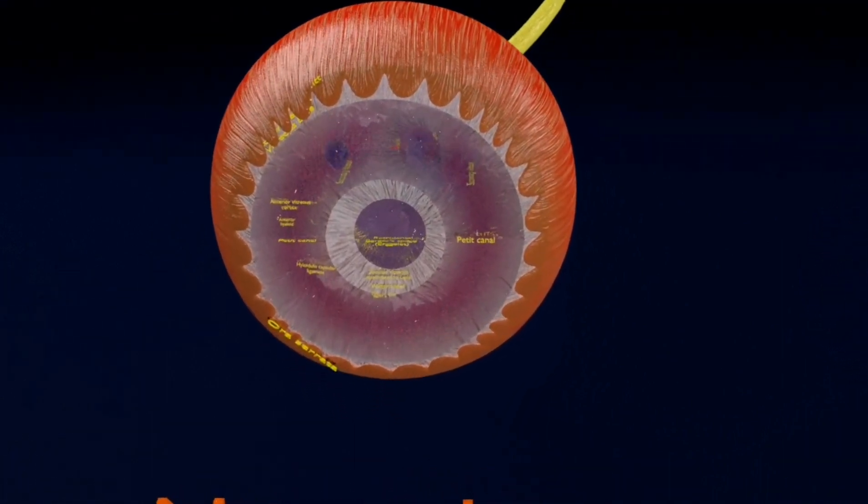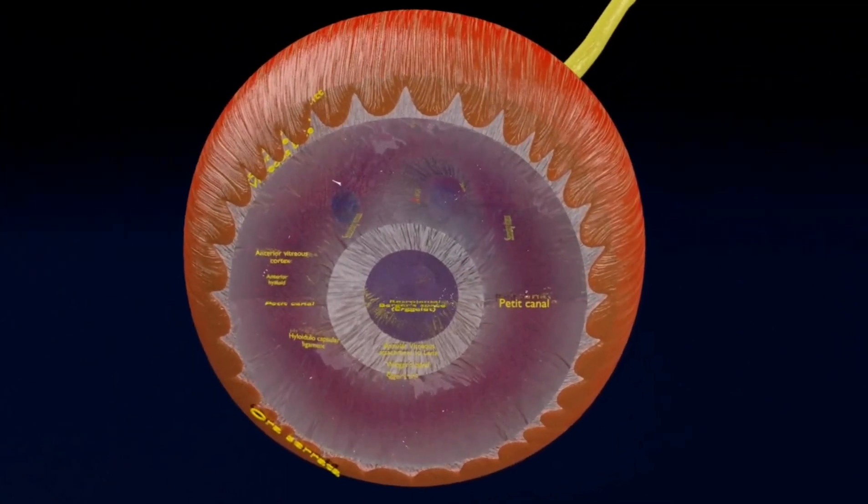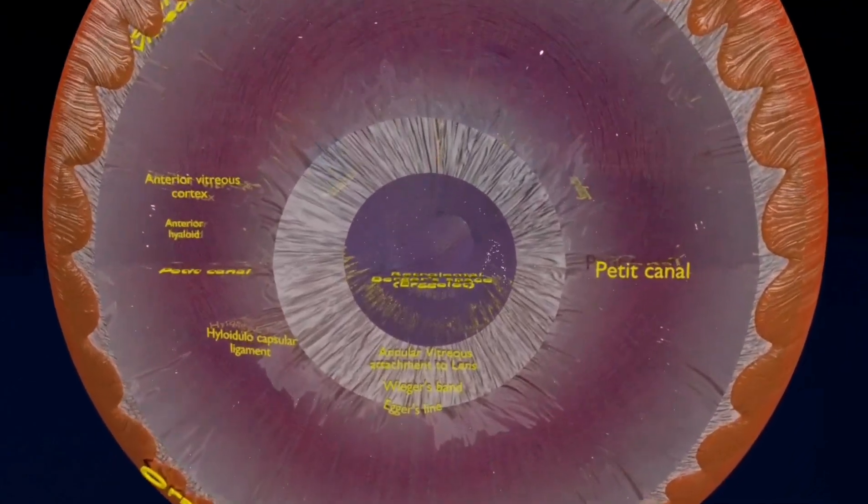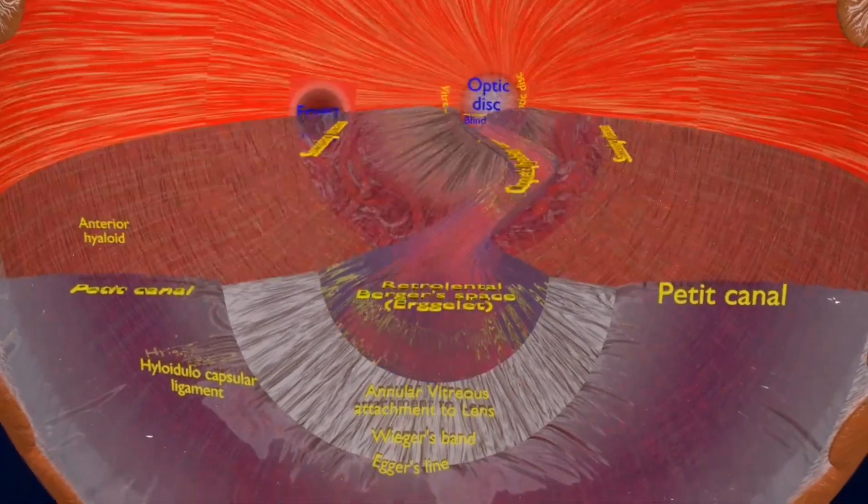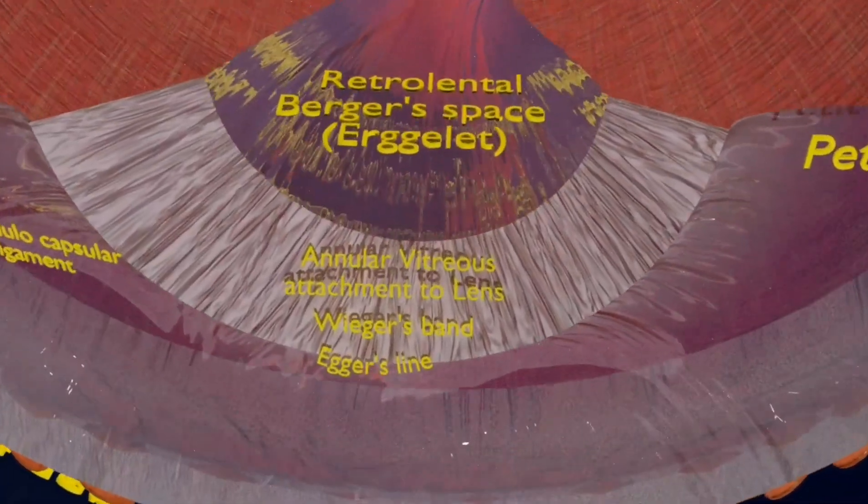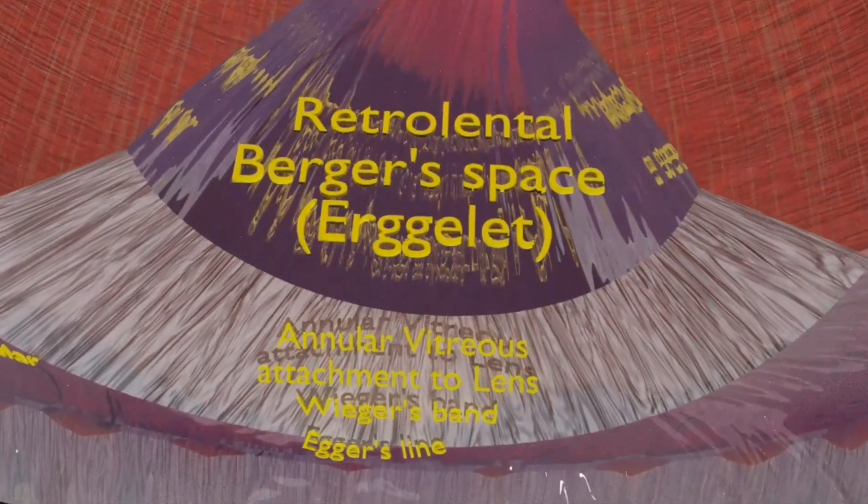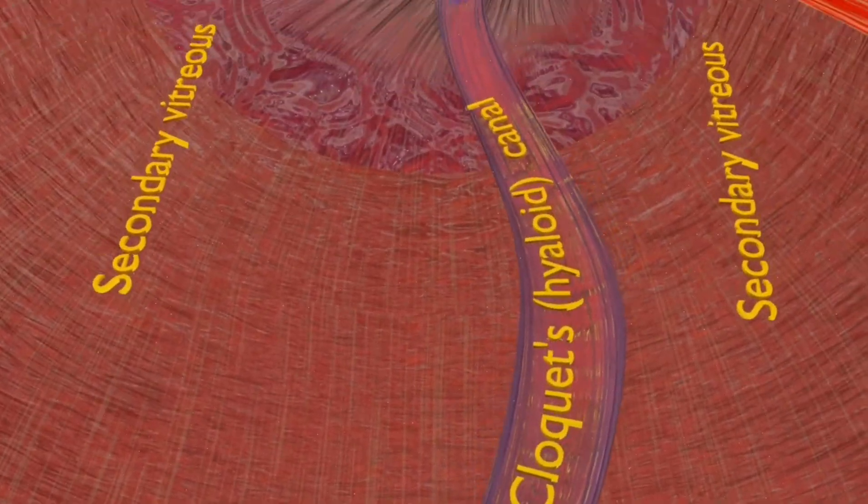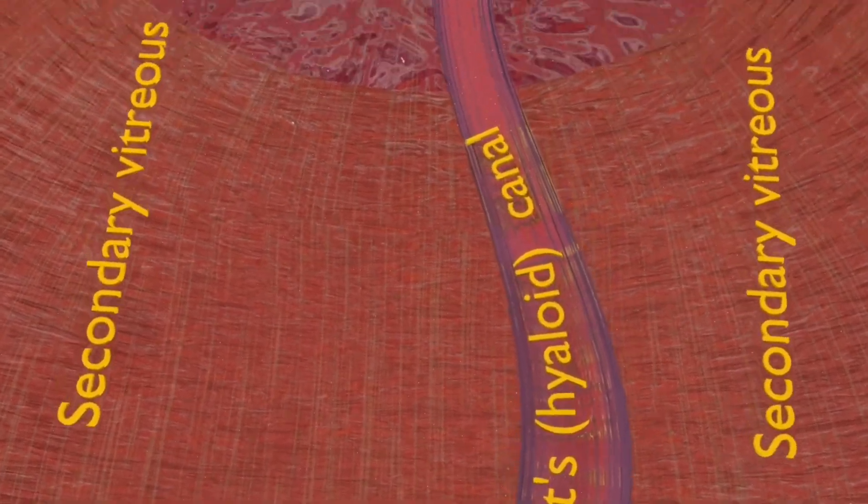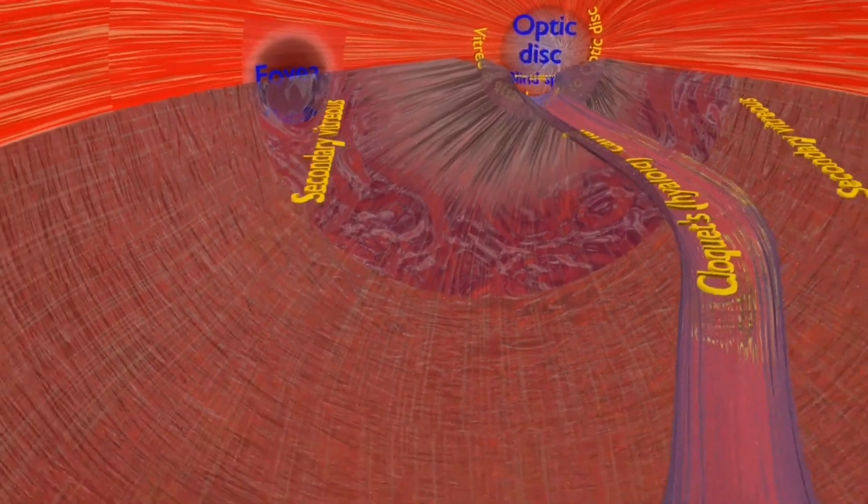After the sequential removal of parts of the eye, we can see the vitreous humor shows us the patellar canal, anterior vitreous cortex, anterior hyaloid, hyaloid capsular ligaments, retrorenal space, angular vitreous attached to the lens, and many more like fovea, macula, and the optic disc. As you can see, the vitreous is also attached to the optic disc in this.